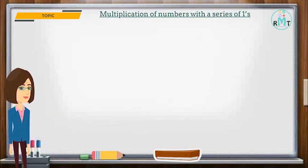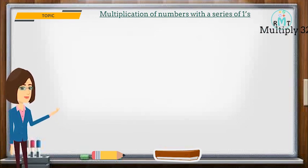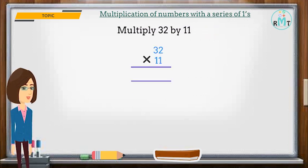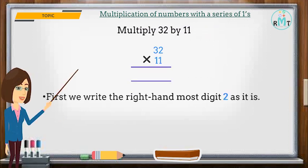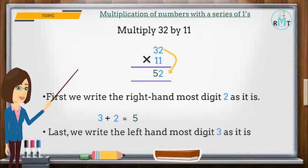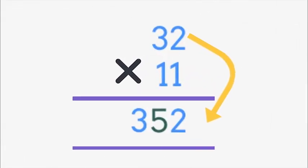Next topic: multiplication of numbers with a series of 1's. Multiply 32 by 11. First we write the right-hand most digit 2 as it is. Next we add 2 to the number on the left, 3, and get 5. Last we write the left-hand most digit 3 as it is. So the final answer is 352.